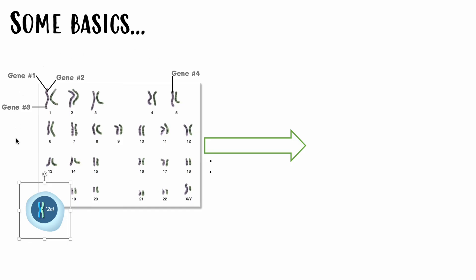When we look at our karyogram, we have genes located all over these chromosomes. We may have a gene here, a gene right below there, a gene on this chromosome, a gene over here — there are genes everywhere located on these chromosomes. Remember that.